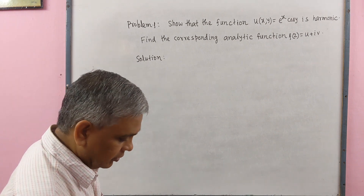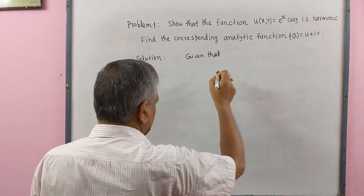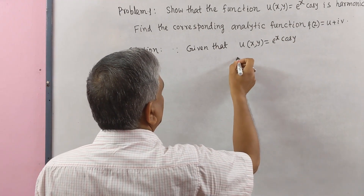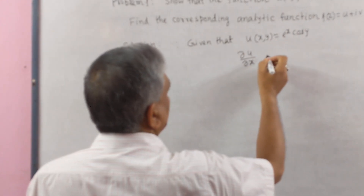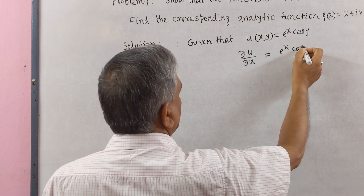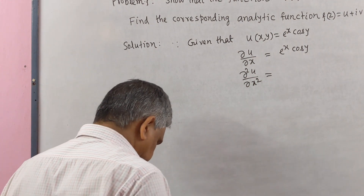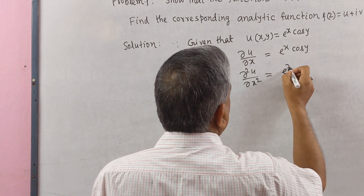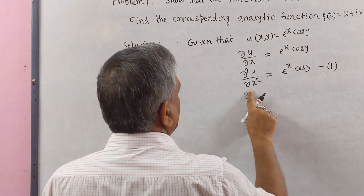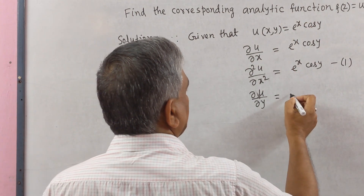Since u(x,y) = eˣ cos y is given, we compute the partial derivatives. ∂u/∂x = eˣ cos y, since differentiation of eˣ is eˣ. Then ∂²u/∂x² = eˣ cos y. This is equation number 1.